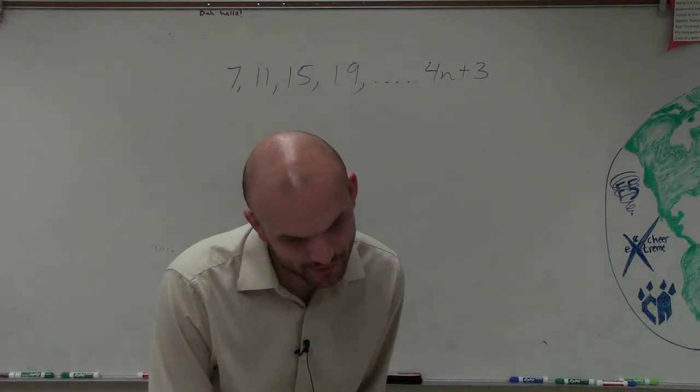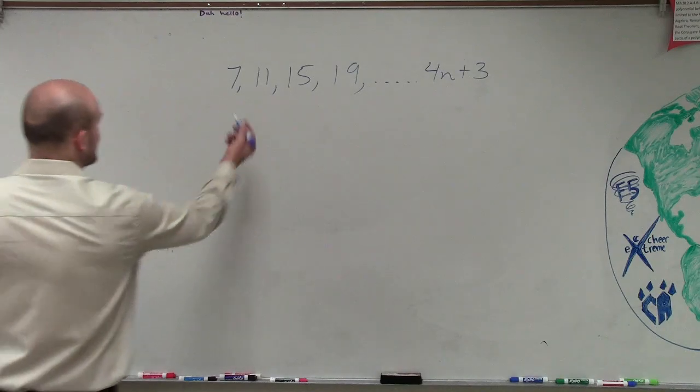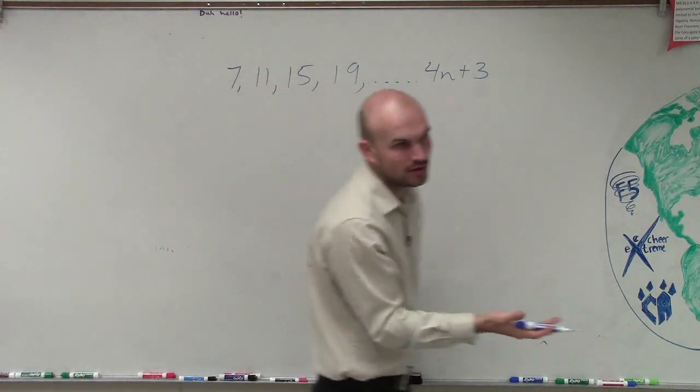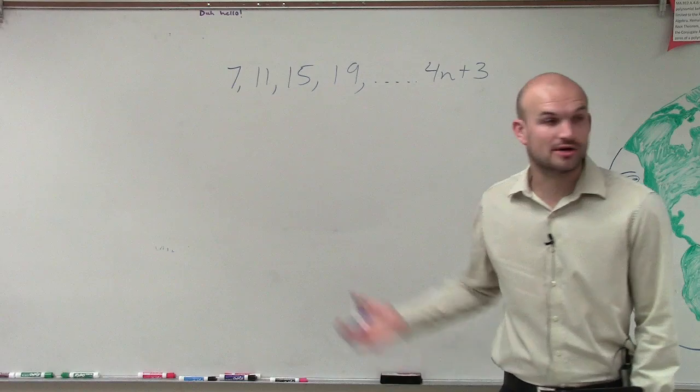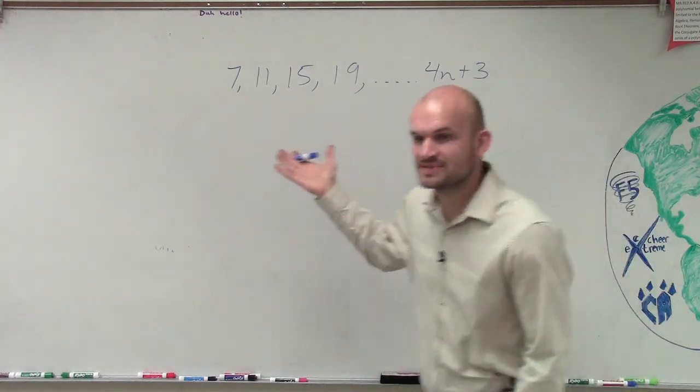So in this example, what we want to do is, we're given the first four terms and then we're also given the rule. And all we're simply asked to do is determine, is this an arithmetic sequence?